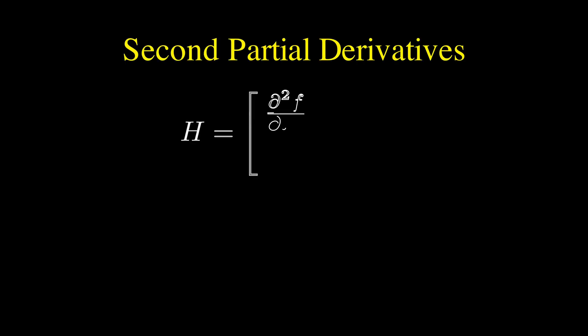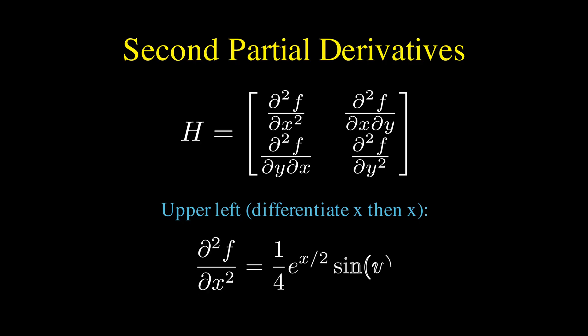Now, when we differentiate this again to get the second derivatives, the upper left component, where we differentiate with respect to x twice, becomes one-fourth e to the x divided by 2 sine of y, because we bring down another half.